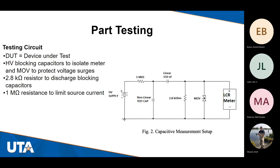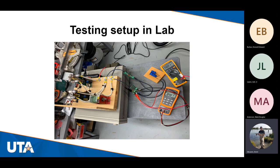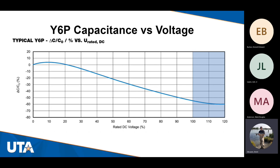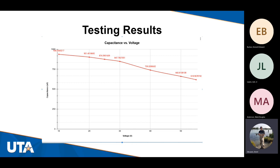Here is the circuit we're using for part testing on the capacitors. We have a high voltage supply to put charge on the capacitor being tested, a large blocking capacitor to isolate the meter, and the remaining components are to protect the meter. Our testing setup in the lab also includes a charge-and-dump circuit for added safety. We have one CV curve that was spec'd on a datasheet, which we will use for validation of our testing results.